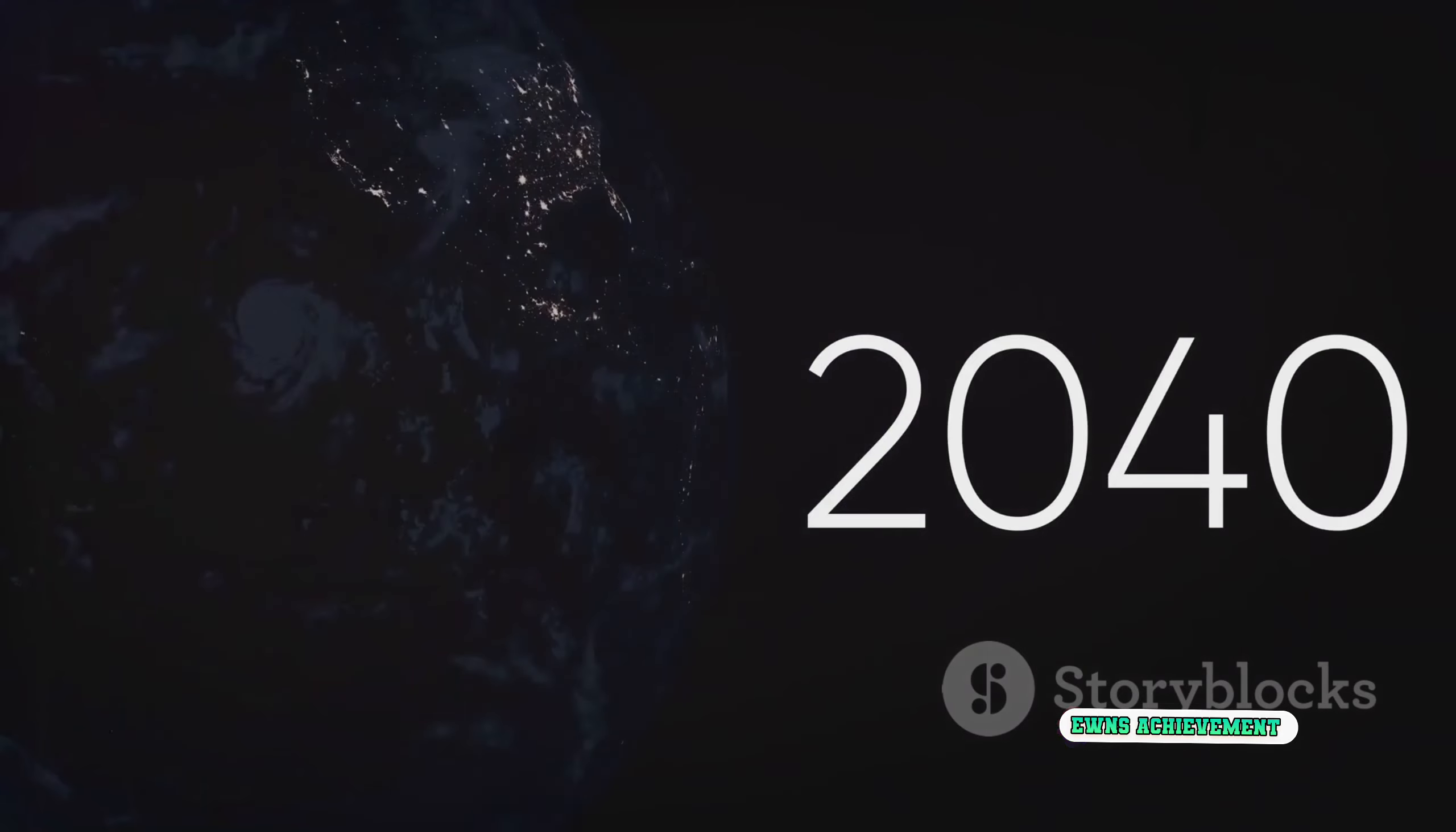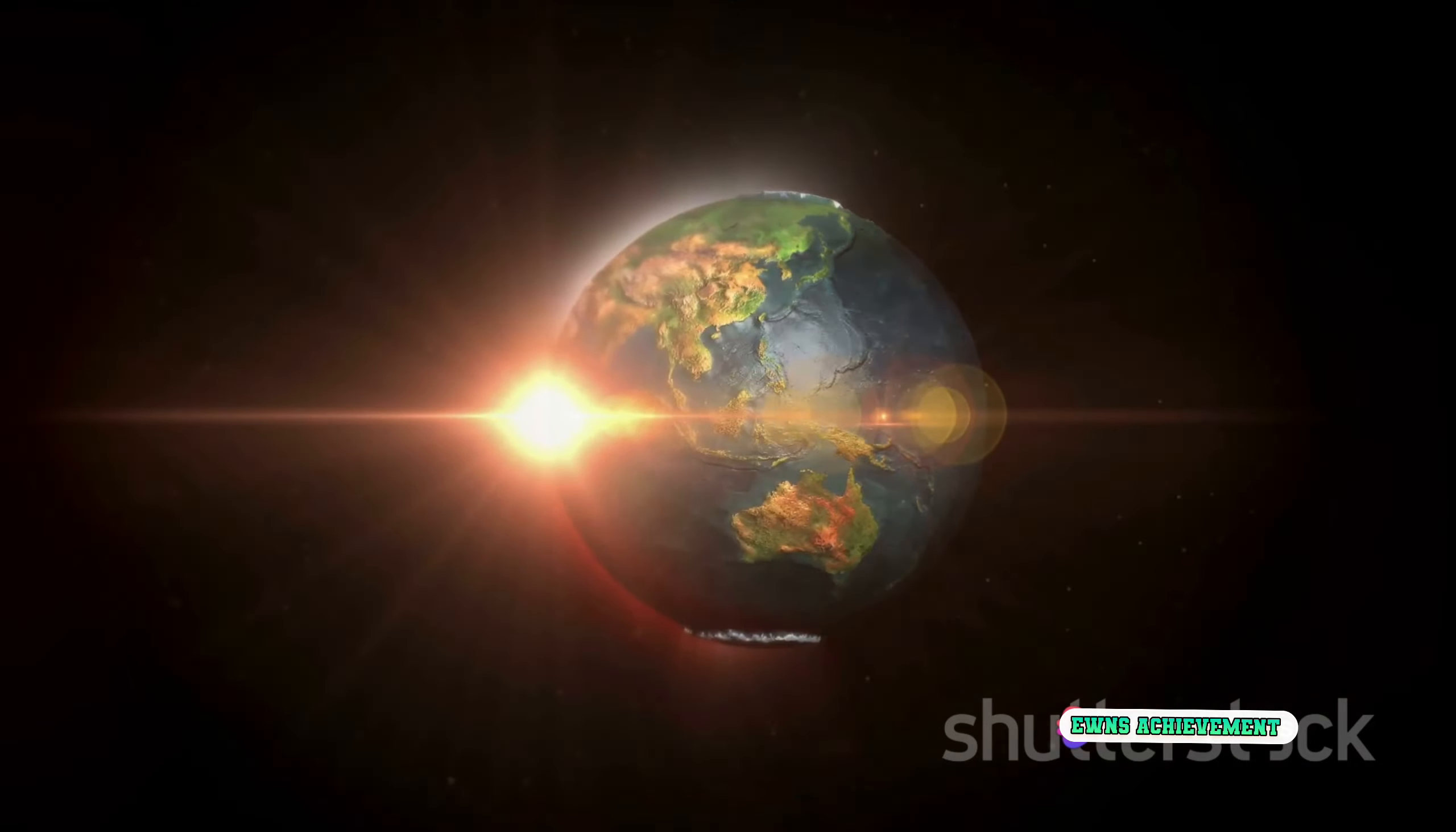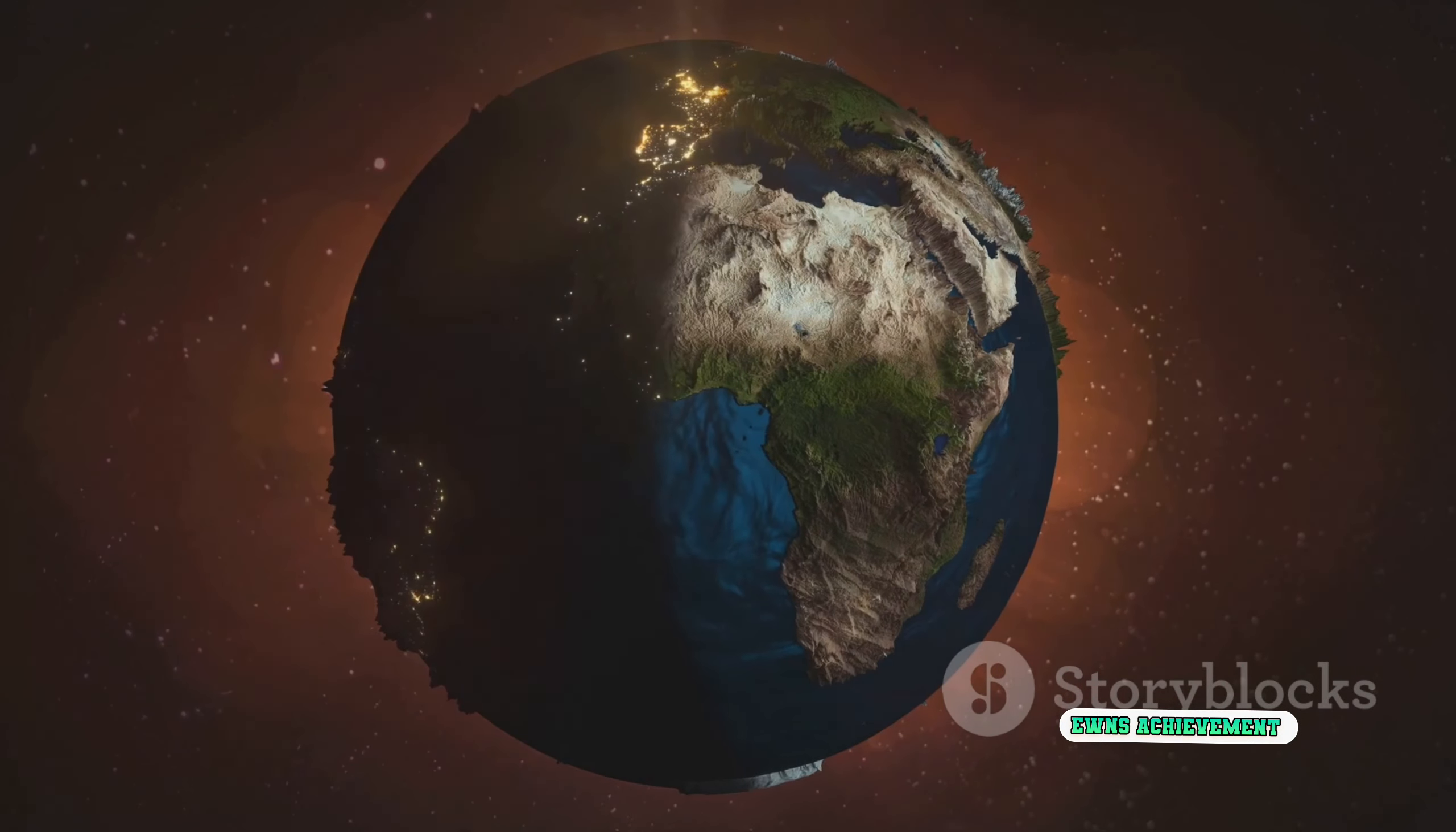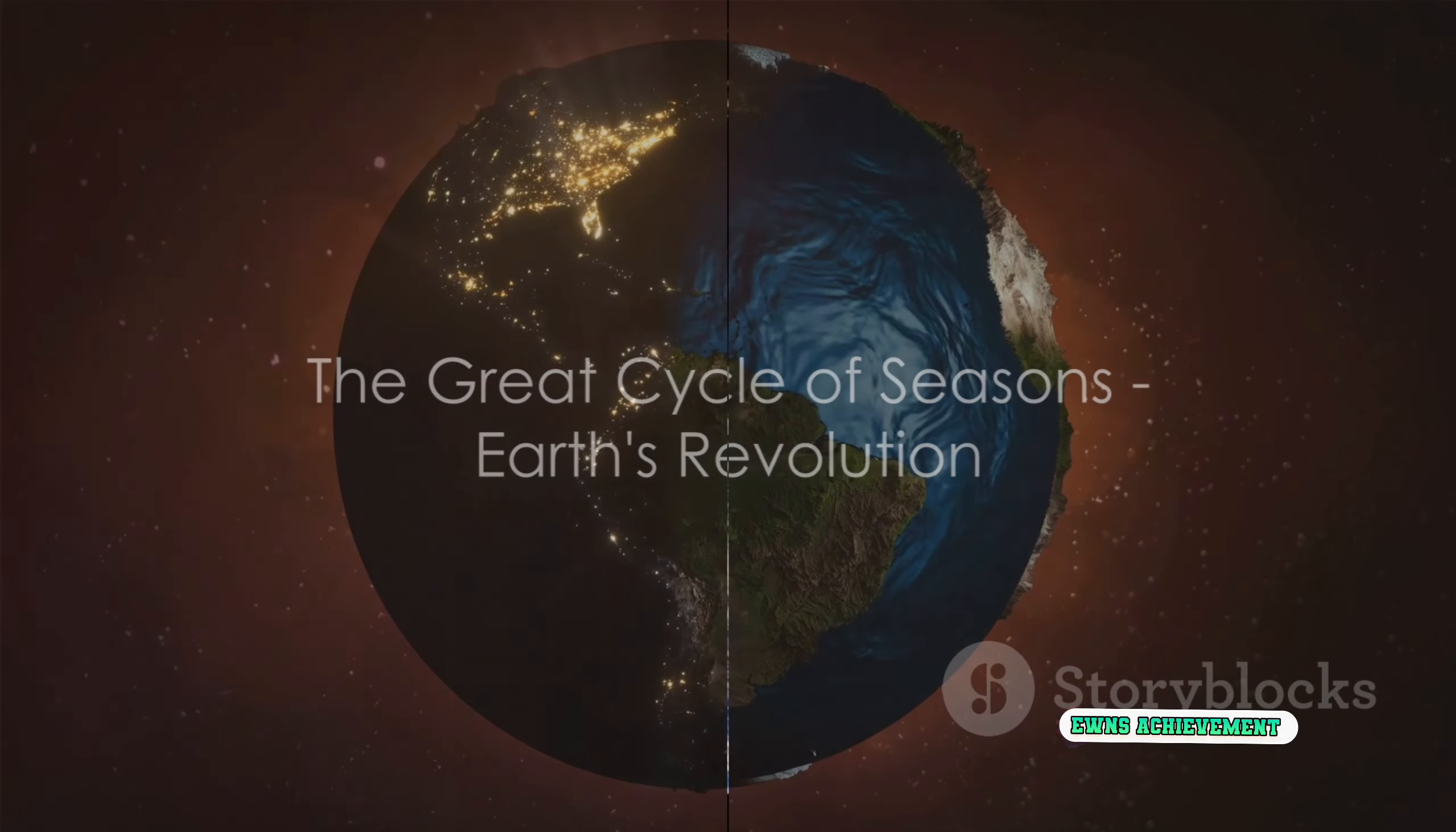But Earth's revolution isn't just a fun cosmic ride. It's also responsible for something we experience every day: the changing seasons. As Earth travels around the sun, the tilt of its axis causes different parts of the planet to receive varying amounts of sunlight throughout the year. This variation in sunlight is what causes our seasons to change, bringing us everything from the warm summer days to the chilly winter nights. And that's how Earth's revolution gives us the beautiful cycle of seasons.